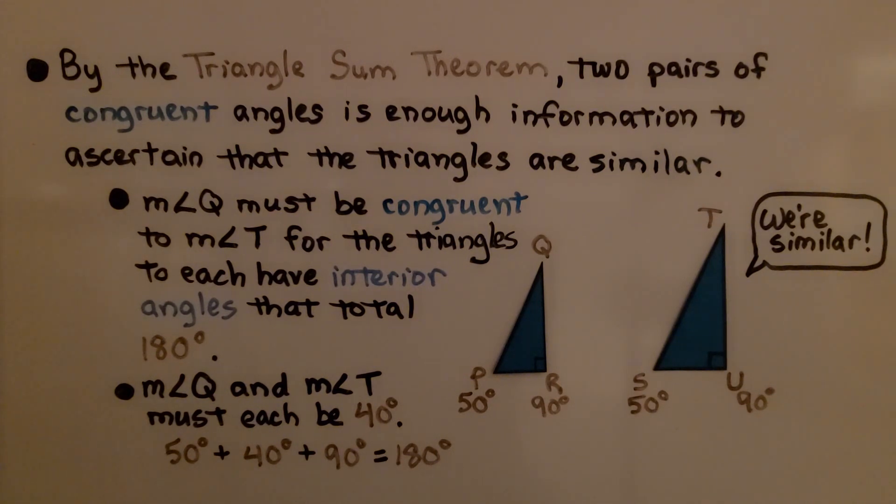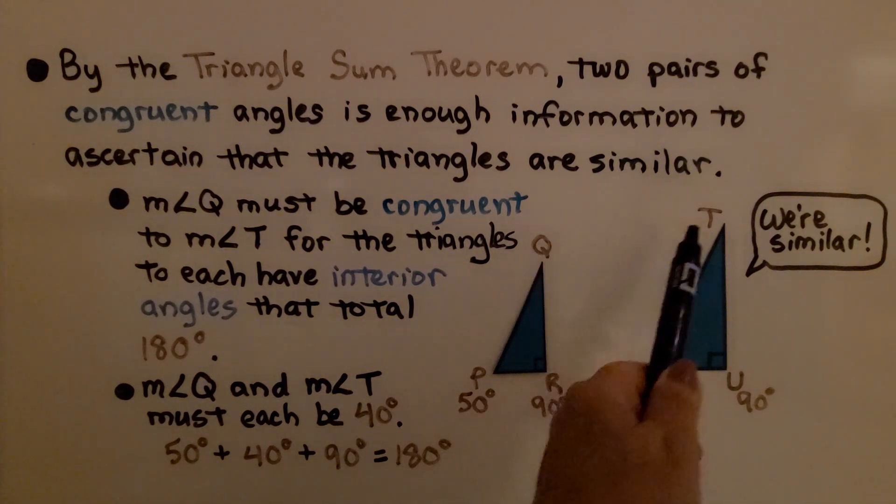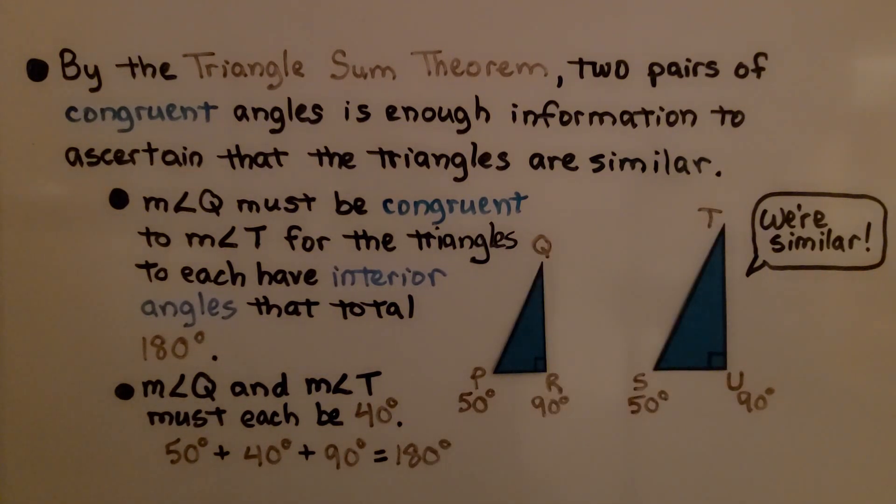two pairs of congruent angles is enough information to ascertain that the triangles are similar. The measure of angle Q must be congruent to the measure of angle T. These two angles must be congruent for the triangles to each have interior angles that total 180 degrees.